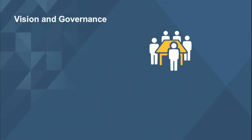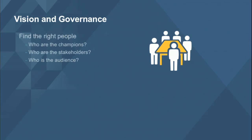Looking at vision and governance, the first thing is to identify the right people. We encourage people to treat this like a project. Understand who the champions are — who are the people that can help you get things done. Who are the stakeholders? Who are the people that are going to care about what the final product looks like and how it works? Also, who is the audience? Who's going to be consuming the information you're making available in the organization or the portal?